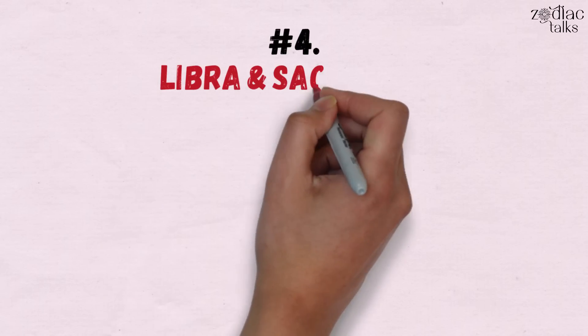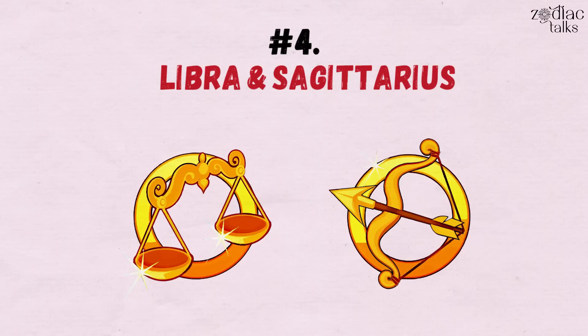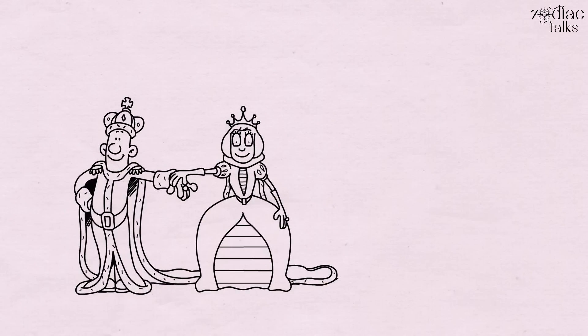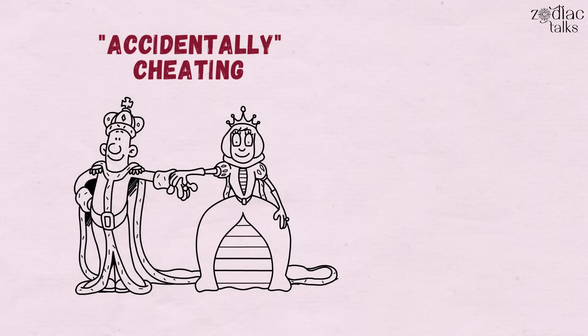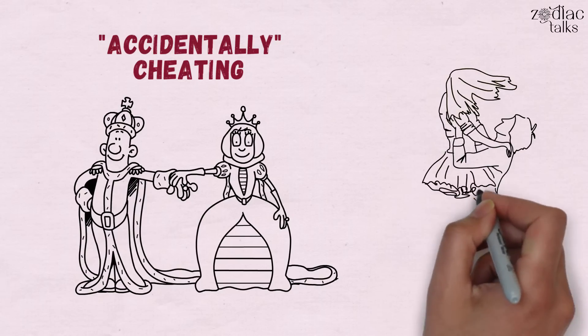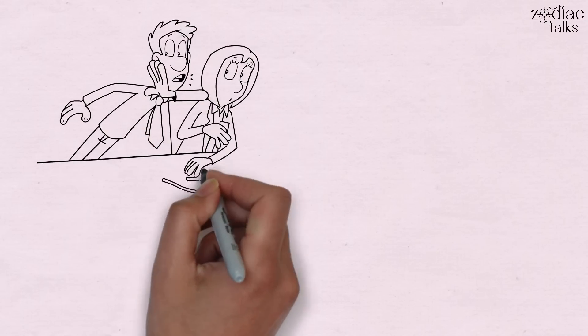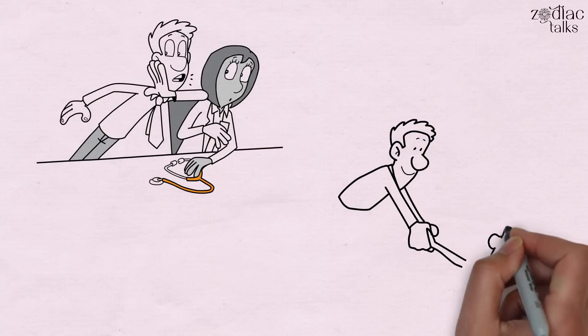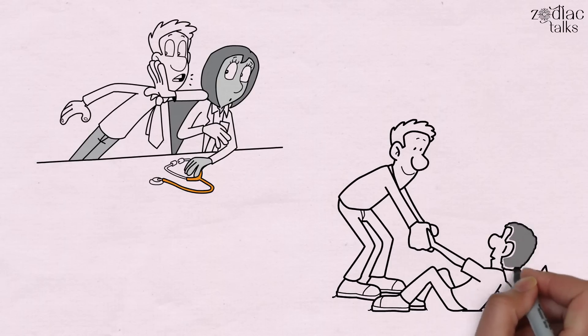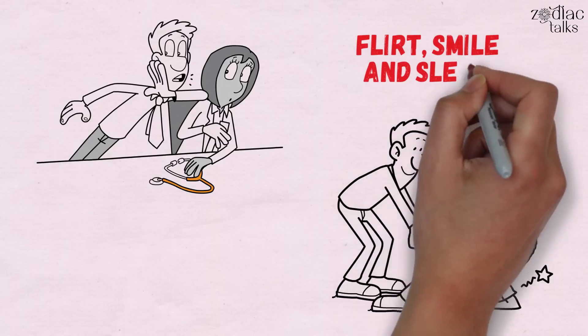Number four: Libra and Sagittarius. These two are the king and queen of trying to get each other jealous and accidentally cheating in the process. Both Libra and Sagittarius are extremely flirtatious. They thrive on sweet nothings whispered in the ear of a lucrative stranger. They both have trouble admitting just how much they care, and their defensive mechanisms are the same. Flirt, smile, and sleep around until the emotions fade to black.